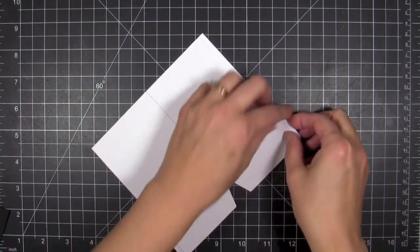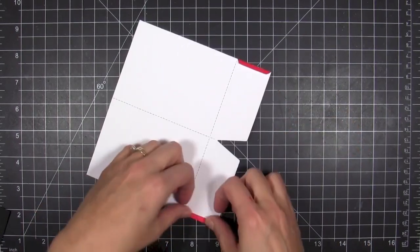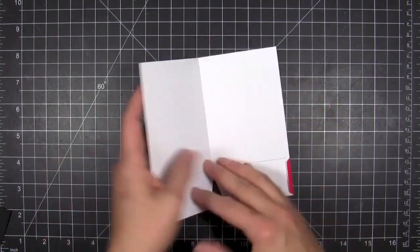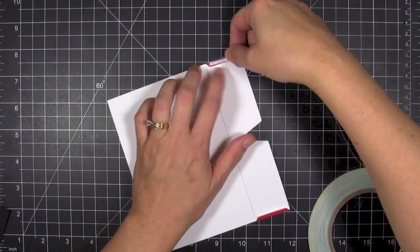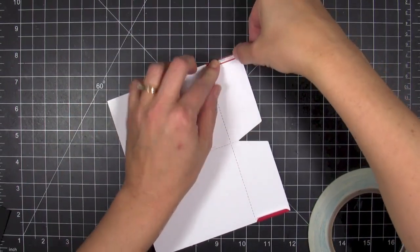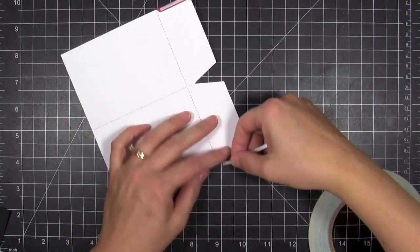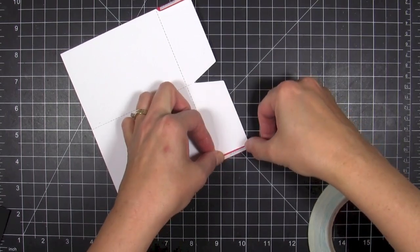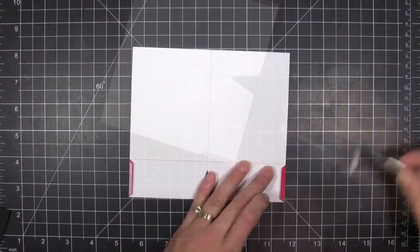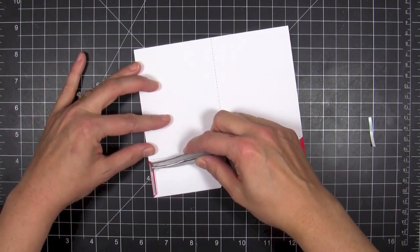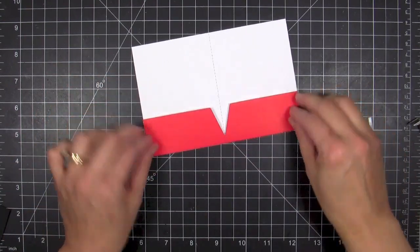So now I just need to fold on the score lines there, and then I'll just take some 1/8 inch Be Creative tape to secure the flaps. I like this tape because you can tear it with your fingers or you can cut it with your scissors, and it's a nice strong tape for when you're putting together things that might have some tension and they need to really hold together well, like box creations.